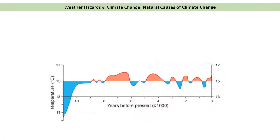Before we begin, here we have a graph showing the climate over the last 11,000 years. This graph is a little bit unusual in that we begin over here — this is today at zero — and it goes in this direction backwards in time. So we've got today, 2,000 years ago, 4,000 years ago, 6,000 years ago, 8,000 years ago, and then 10,000 to 11,000 years ago. The blue parts are where it was below the average temperature and the red parts are where it was above the average temperature.